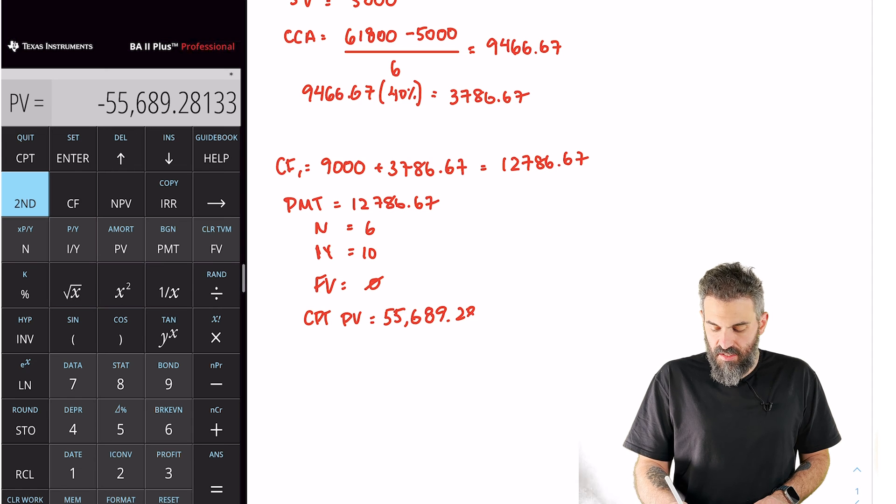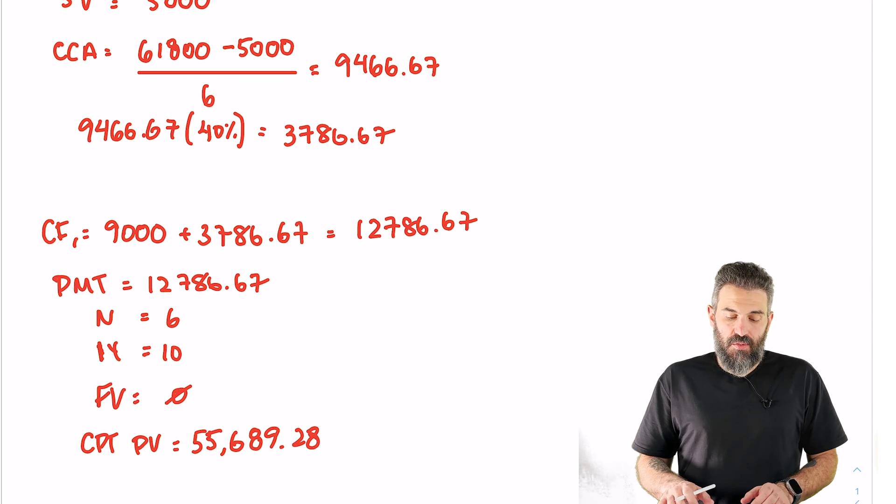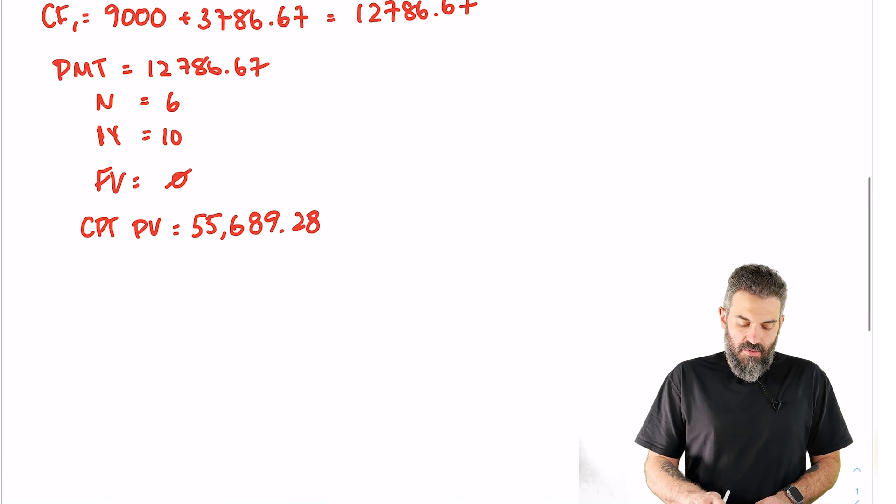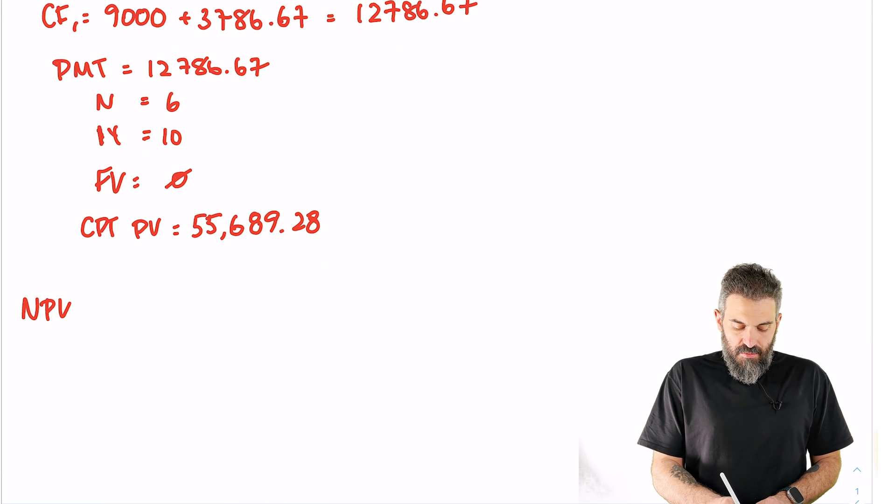That is the present value of my annual cash flows. Now we can put it all together. The net present value will be that number, the present value of the annual cash flows.